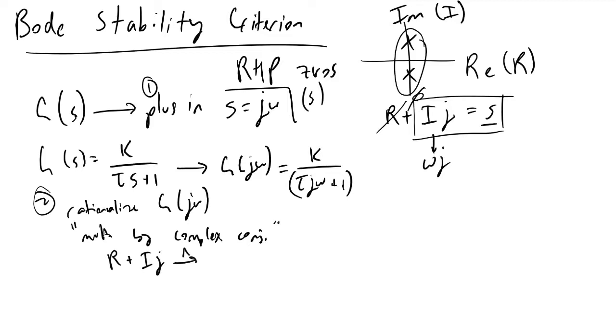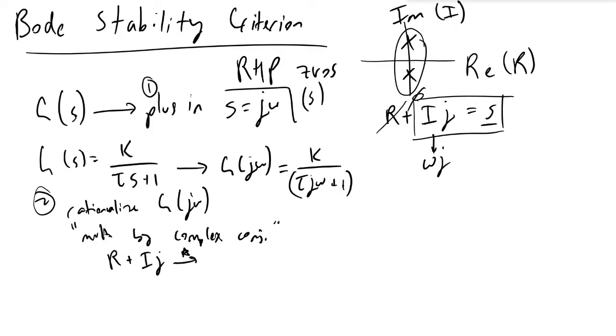The complex conjugate, commonly denoted as star, if we had R plus IJ, would be equivalent to R minus IJ. In this case, we can recognize tau and omega as I and R as one. So multiplying this term by the complex conjugate would be minus tau J omega plus one, and we multiply the numerator by the same term.